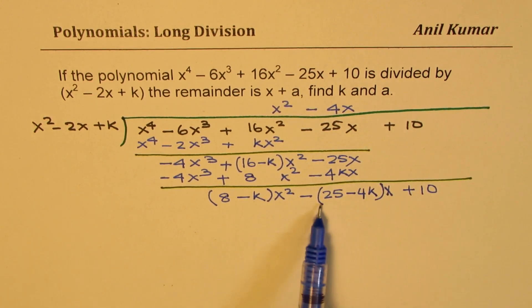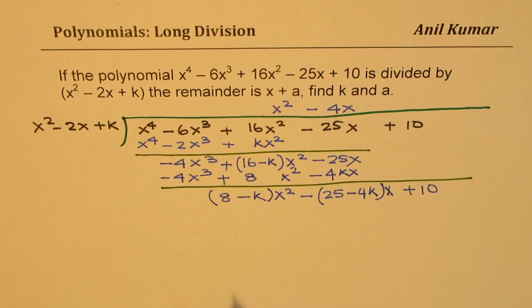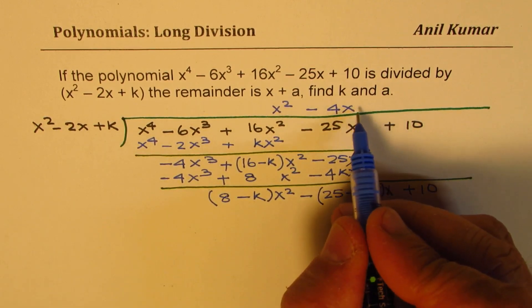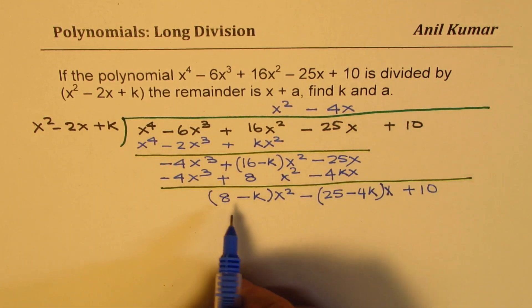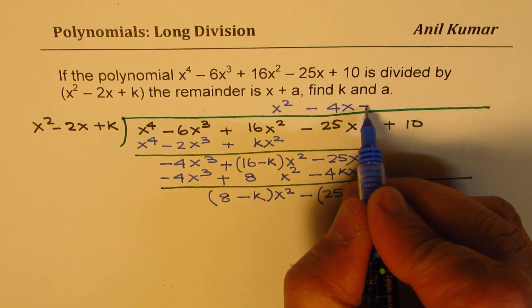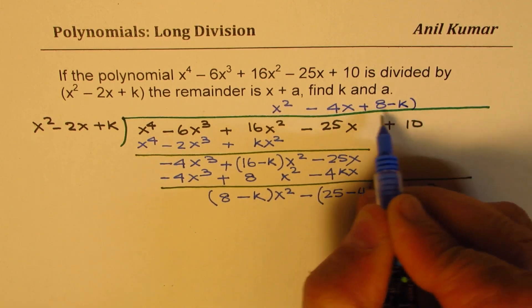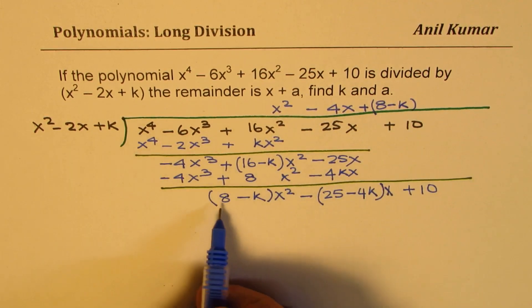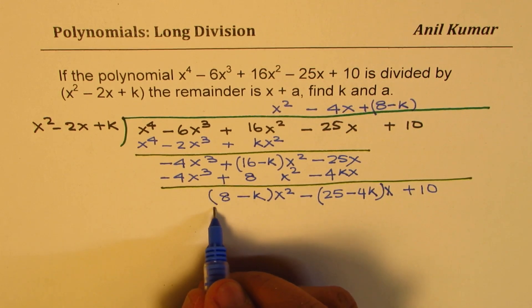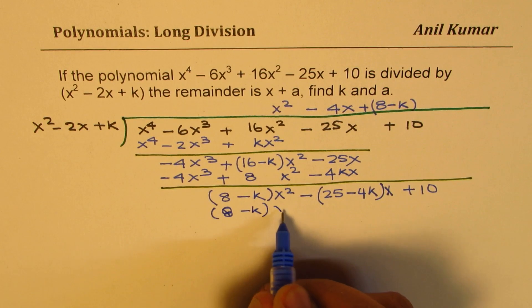If you do not want to write brackets, if you find that to be simpler, you can do so. Now we need to multiply our divisor by this term 8 - k. So we get +(8 - k) here. So you multiply by 8 - k. The first term is taken care of. So we have (8 - k)x^2.